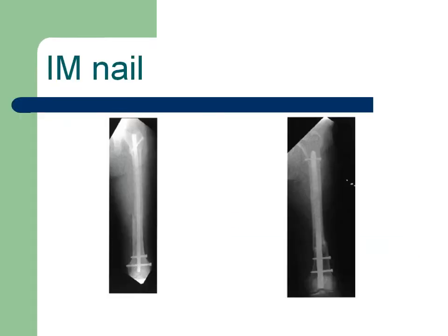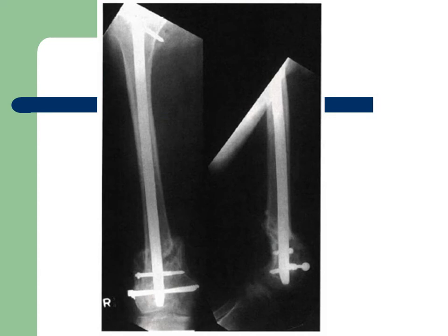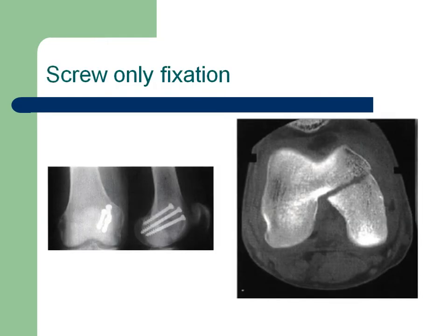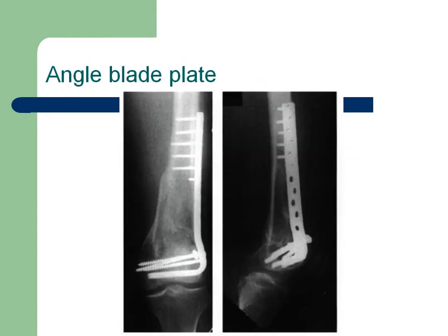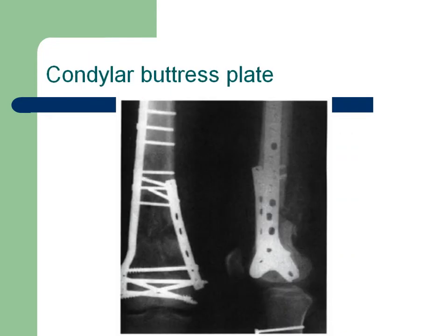Regarding intramedullary nailing: the interlocking IM nail — both antegrade and retrograde — can be used especially for Type A fractures for fixation of this distal femoral fracture. Screw fixation can be used for single condyle injuries. Also, DCS — dynamic condylar screw — and angle blade plate can be used for ORIF of these fractures.